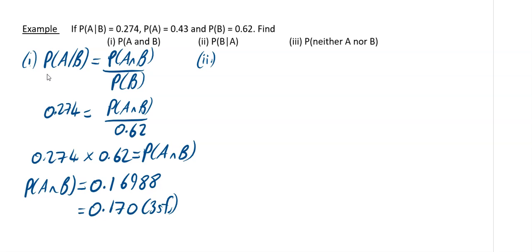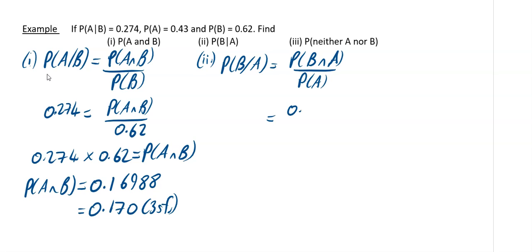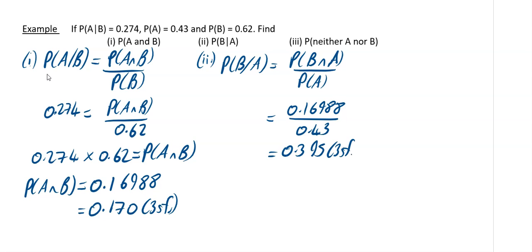For part 2, once you have P(A and B) it is straightforward to find P(B given A). That is P(B intersect A) divided by P(A). Using the more precise value 0.16988 divided by 0.43, you get 0.395 to three significant figures.